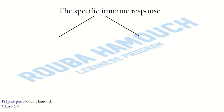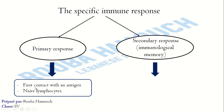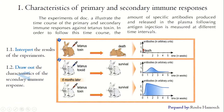The specific immune response, whether humoral or cell-mediated, is triggered as a primary response following the first contact with an antigen. The effectors of this primary response are naive lymphocytes that fight the antigen for the first time. If the same antigen enters the body again, memory lymphocytes will fight it during the secondary immune response, which is triggered by subsequent encounters with the same antigen.